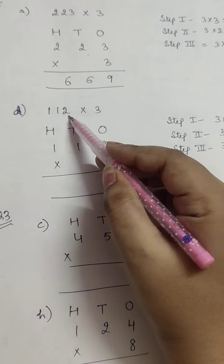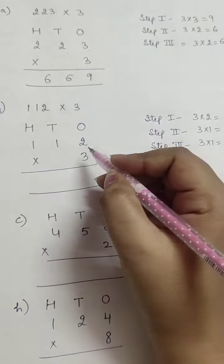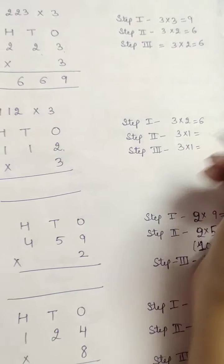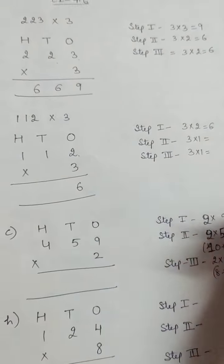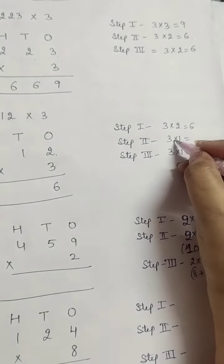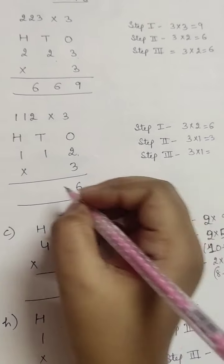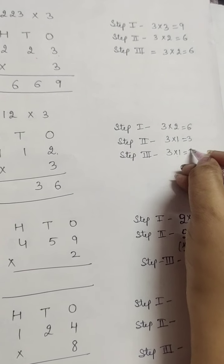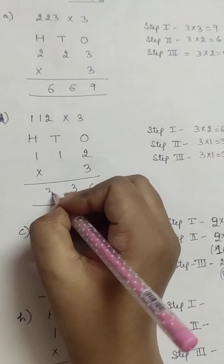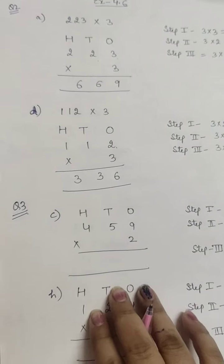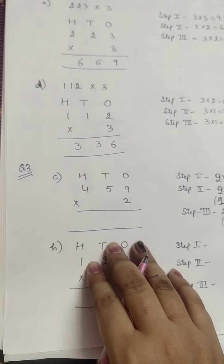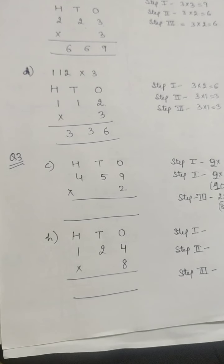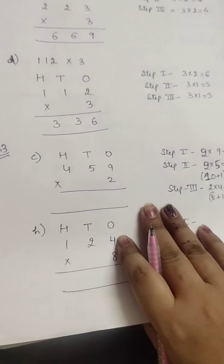Next is part D: 112 multiplied by 3. Your very first step: 3×2 = 6, so you will write 6. Second step: 3×1 = 3, so you will write 3. Third step: 3×1 = 3, so you will write 3. Your answer comes out to be 336. Next is question number 3: you have to multiply and write the product.